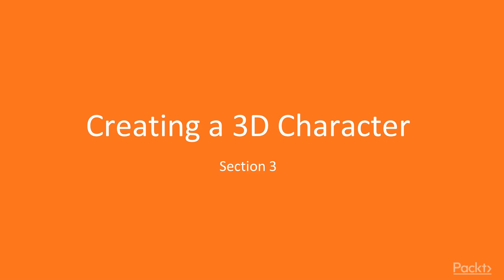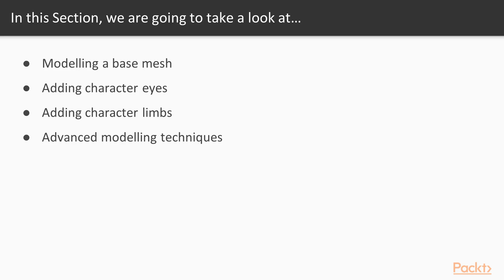Welcome back to section 3, creating a 3D character. In the last two sections, we learned the basics of how to use Blender to create different and more complex shapes. In this section, we will be going over how to model our first 3D character in Blender. In the following sections, we will learn how to rig and animate this character to bring him to life.